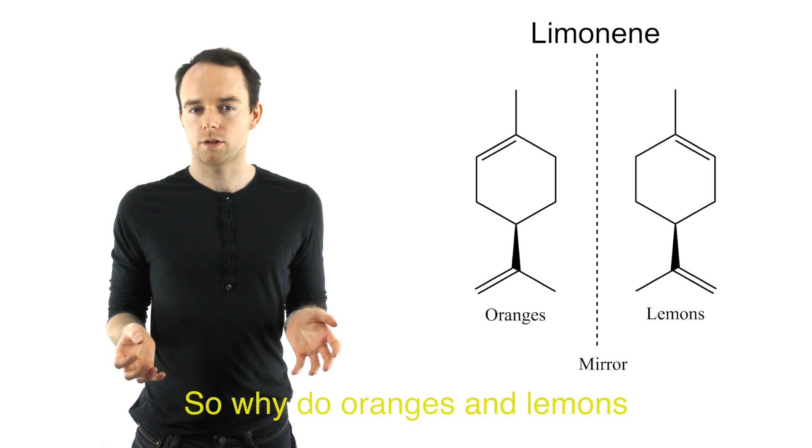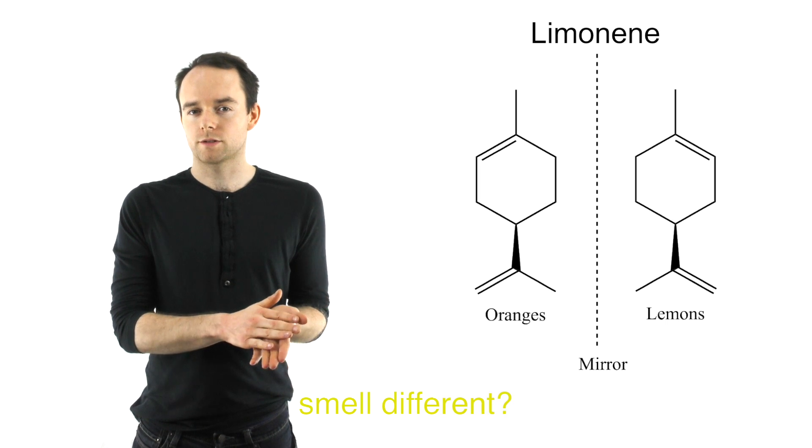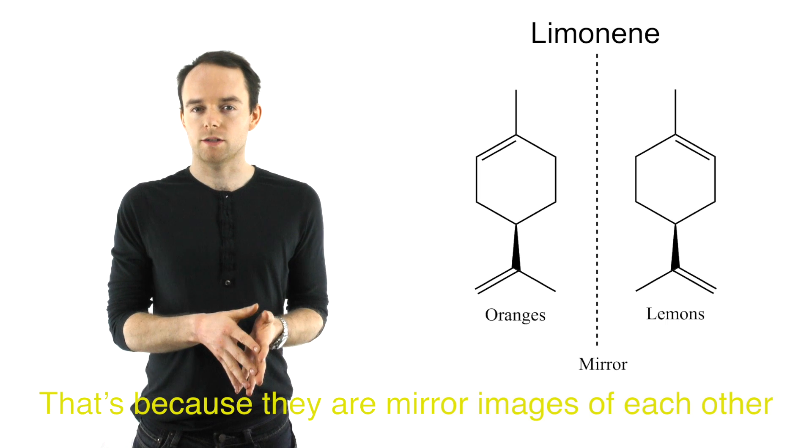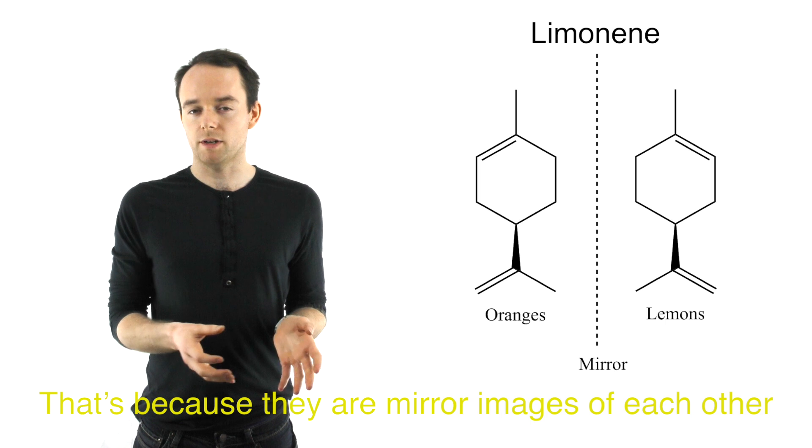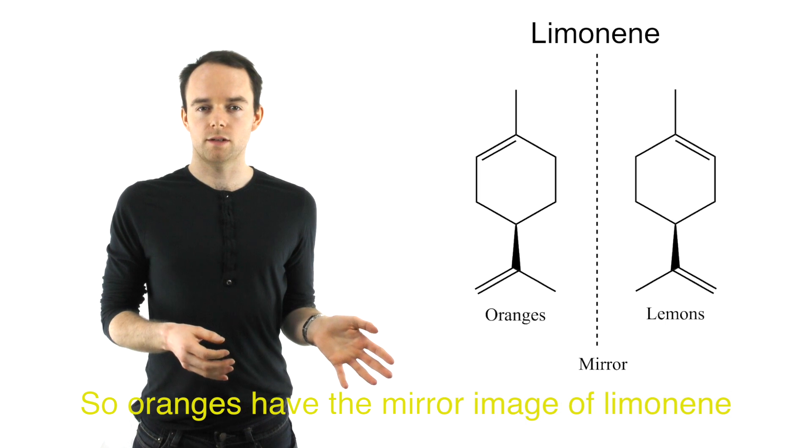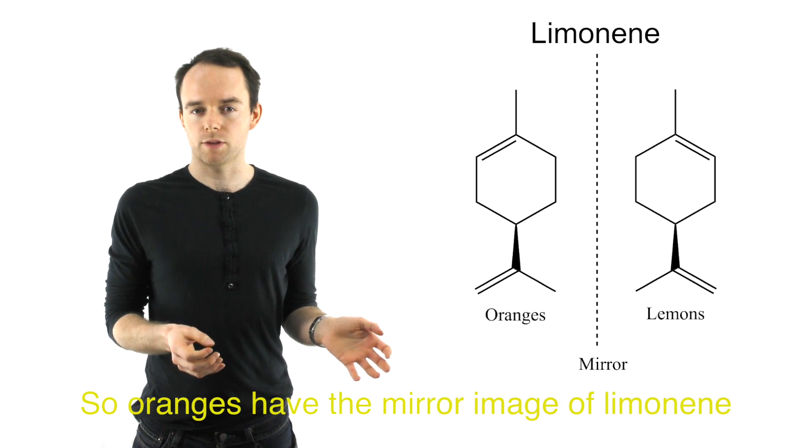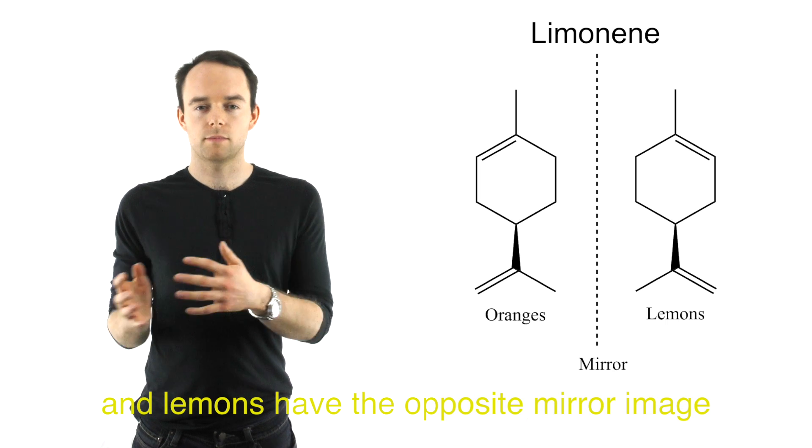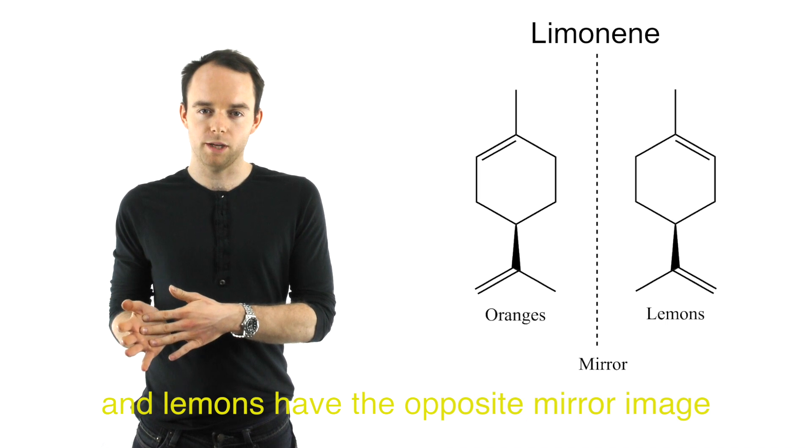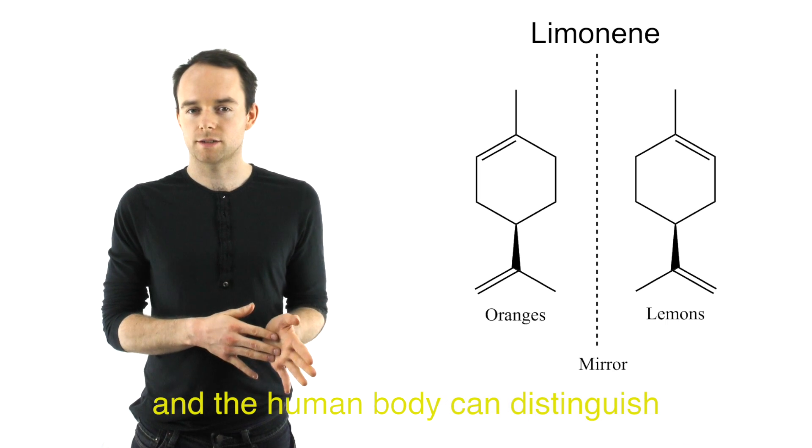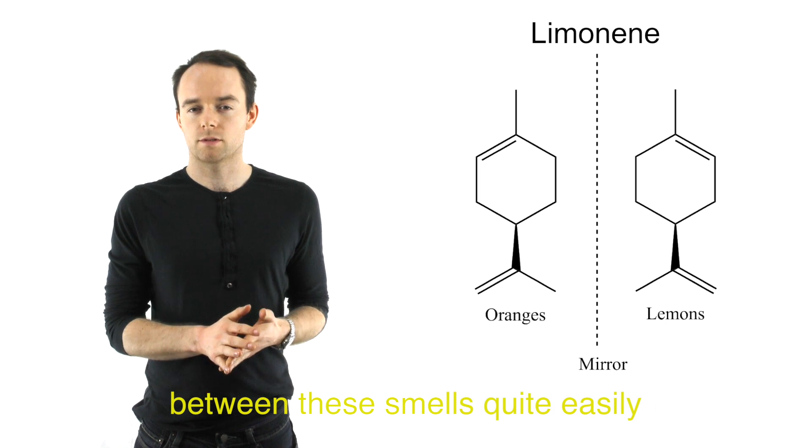So why do oranges and lemons smell different? That's because they are mirror images of each other. Oranges have one mirror image of limonene and lemons have the opposite mirror image, and the human body can distinguish between these smells quite easily.